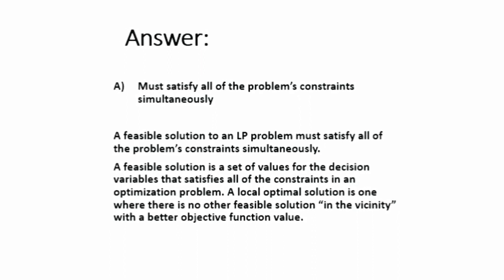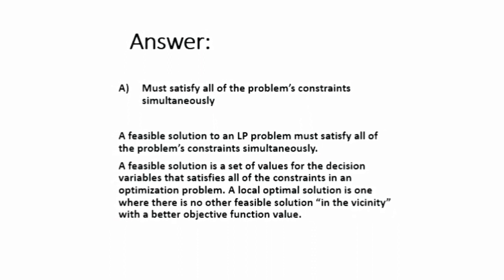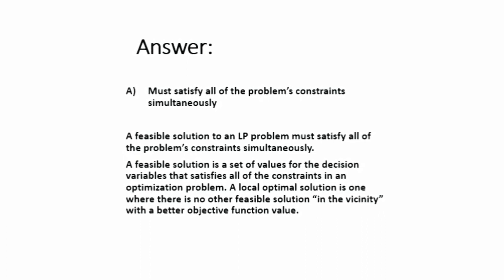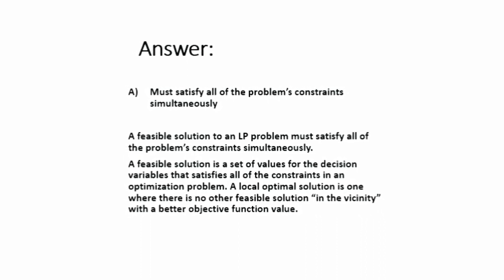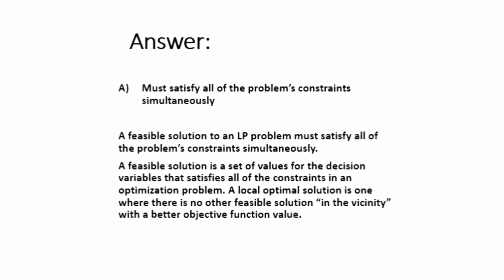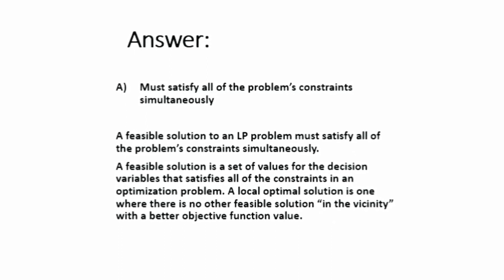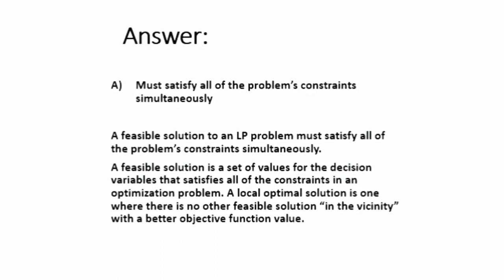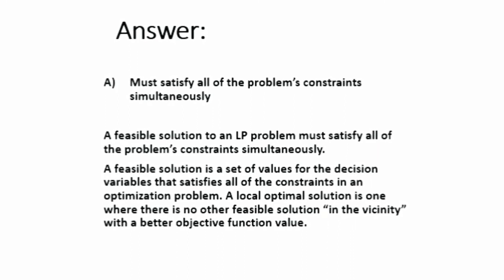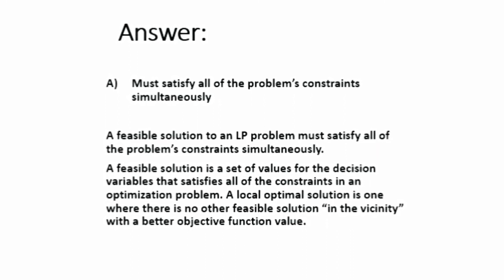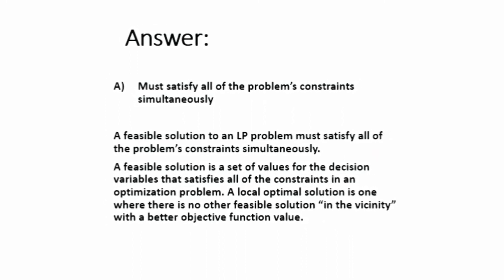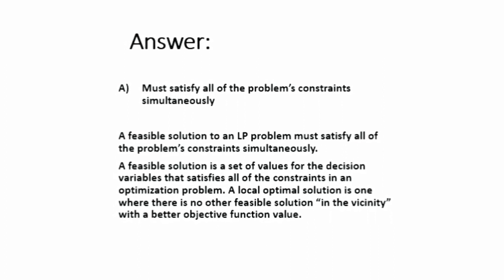The answer is option A: must satisfy all of the problem's constraints simultaneously. A feasible solution is a set of values for the decision variables that satisfies all of the constraints in an optimization problem.